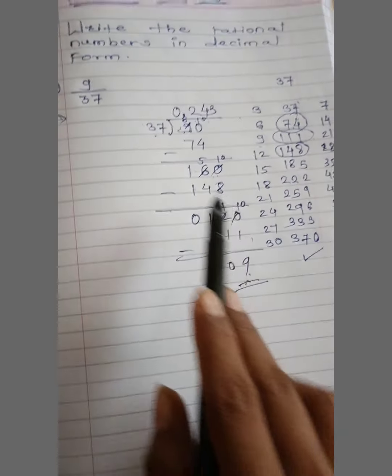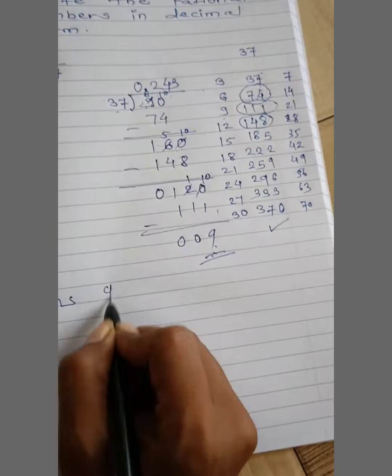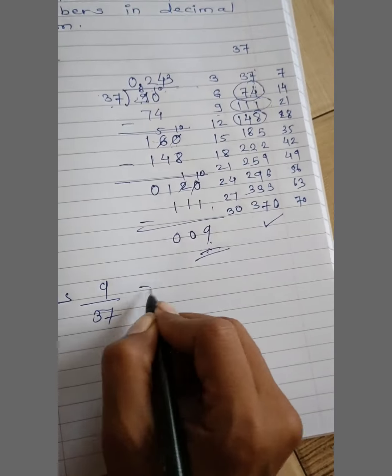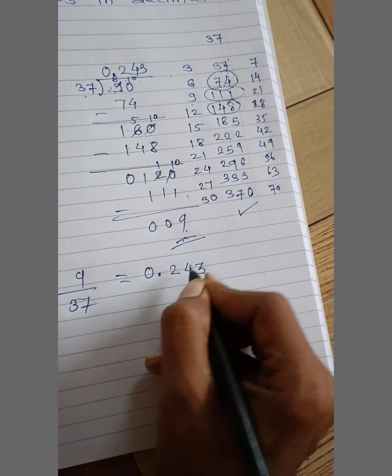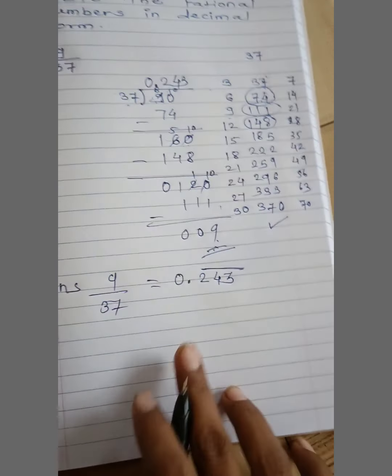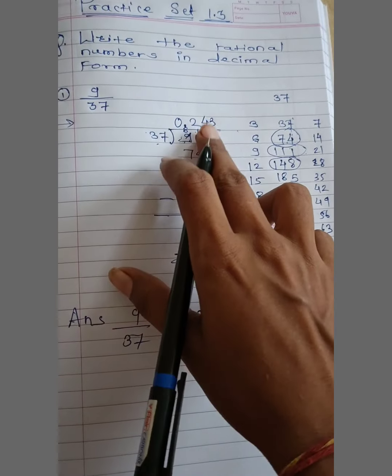Again same number. Answer is 9 divided by 37. Answer is 0.243 bar. Kyunki yahan par 2, 4, 3 repeat ho ra hai. Is liye uus ke upar bar diya hai.